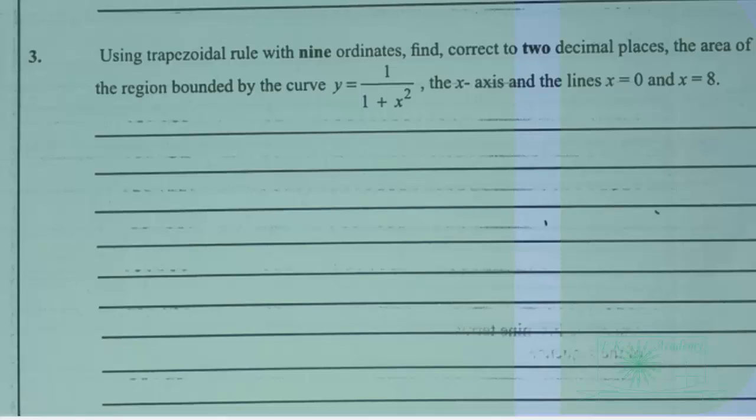Using trapezoidal rule with nine ordinates, find correct to two decimal places the area of the region bounded by the curve y equals 1 over 1 plus x squared, the x-axis, and the lines x equals 0 and x equals 8.